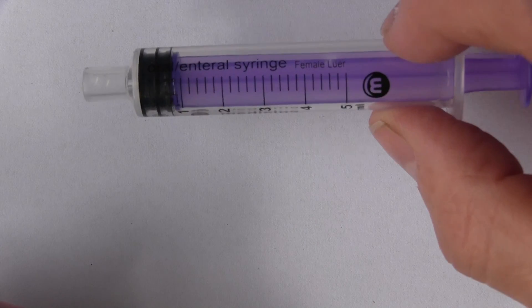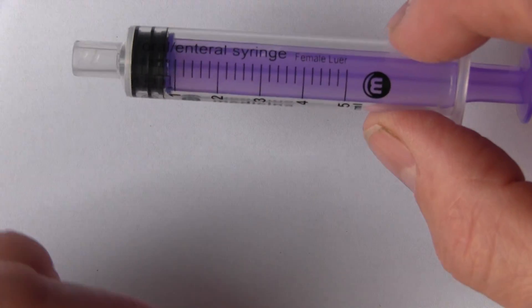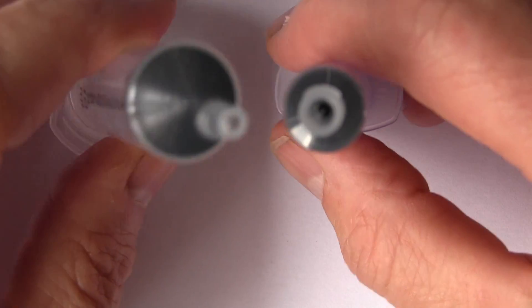Now what's the difference? Well the obvious one here is that this is purple and this is not, so the enteral syringe is marked out with being purple. And when we look at the ends, we can see what the primary difference is between the two.